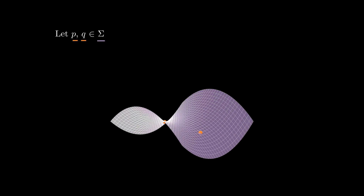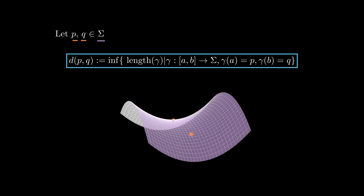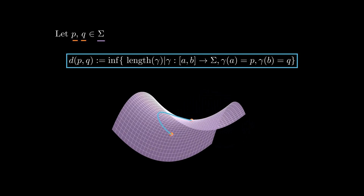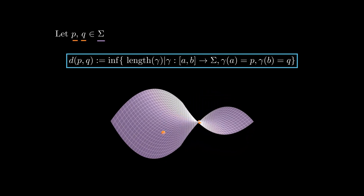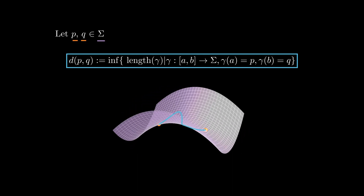Hello again everyone. Today we will talk about geodesics and minimizing curves, which are central objects in geometry. As always, we start with a surface sigma and take two points p and q on sigma. We define the induced distance between p and q, denoted simply by d(p,q), as the infimum of the set of lengths of all curves between p and q that run along the surface sigma.